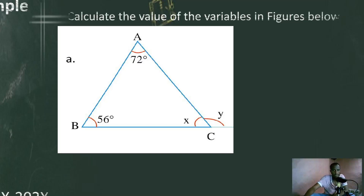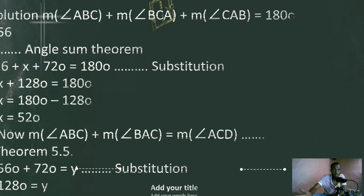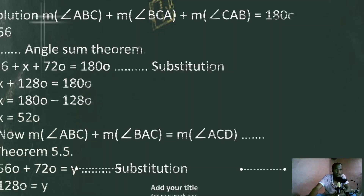There is one rule. This angle is a remote angle. The sum of 56, 72, and X must be 180 degrees. So: measure of angle ABC plus measure of angle BCA plus measure of angle CAB equals 180 degrees — because the sum of interior angles of any triangle is 180. So here we have 60 plus X plus 72 equals 180.